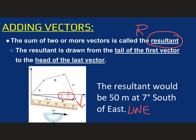like this one does, it has seven degrees and it is south of the east line. We can say that. All right. This resultant is 50 meters in length and it's found seven degrees south of the east line. So that's how we describe it. It's got magnitude and it has direction. So it's a vector.